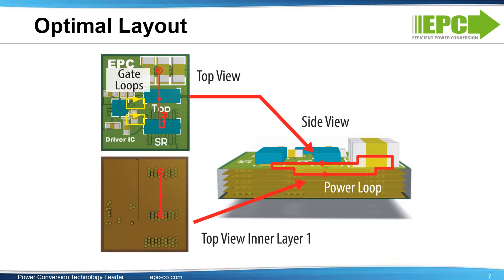The smallest power loop and gate loop inductance can be achieved by taking advantage of an inner PCB layer to form an optimized return path. The decoupling capacitors are placed close to the drain of the high side transistor. PCB vias are used to connect the ground terminal of the capacitors to the low side source by way of the first inner layer, where the dielectric thickness needs to be intentionally kept thin to keep the inductance low. An example of this optimal layout technique is shown here.